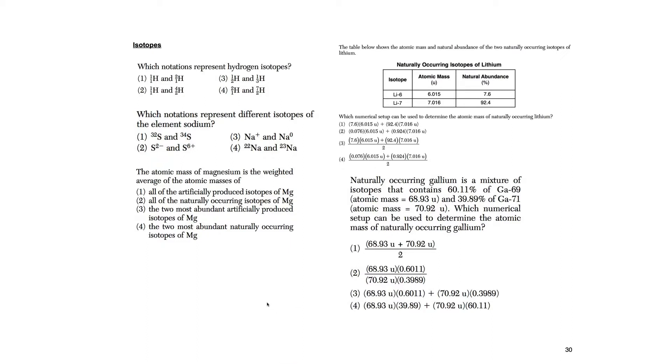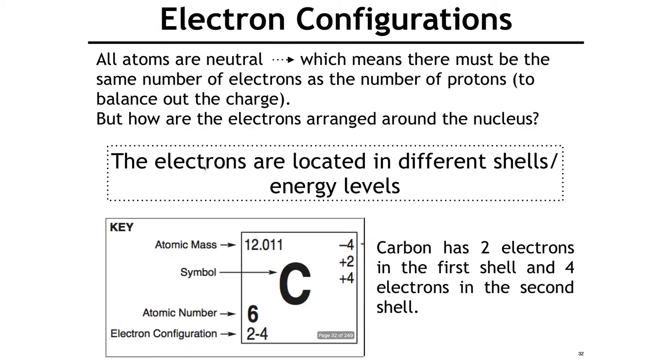Same setup here — and this time they ask you to set it up without multiple choice. It's 0.57 times this number plus 0.43 times that number. You don't even have to solve it; they just ask for a numerical setup.